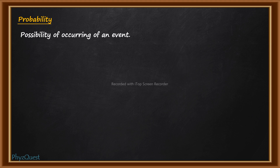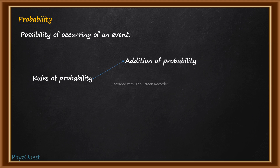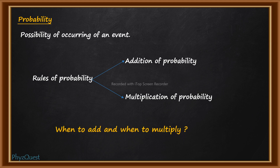There are many formulas regarding calculation of probability, but mainly they are categorized into two types: either we add the probability or we multiply the probability. The real question is when to add and when to multiply — often students get confused with that.